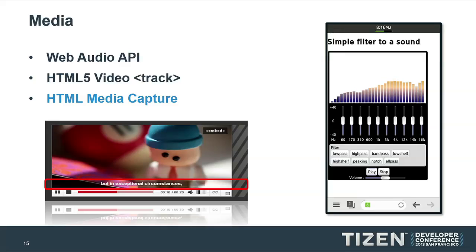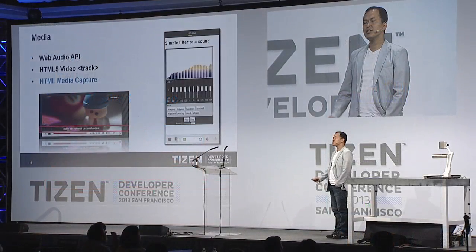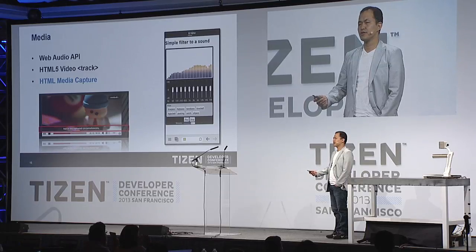For Tizen 2.1, we added three more media features. In the case of the Web Audio API, it's a really powerful API for handling audio. HTML5 already has the audio and video tags for playback, but those only support playback — they don't support accessing PCM data or applying filtering features for sound signals. Those capabilities are covered by the Web Audio API, so using this API, you can make audio production software.